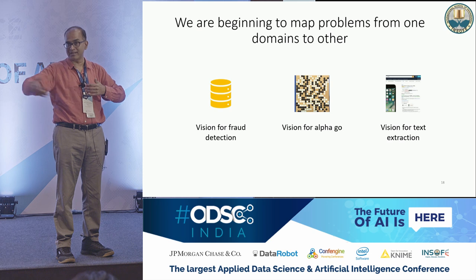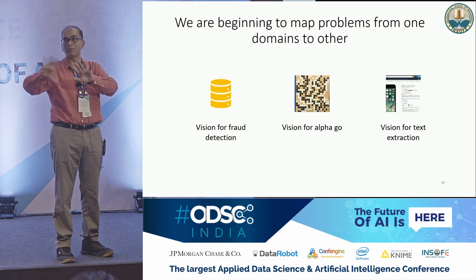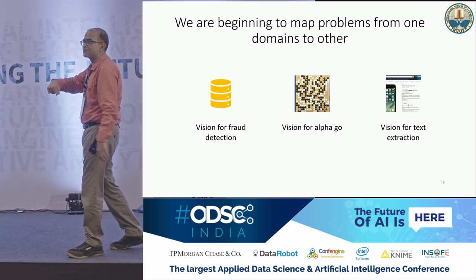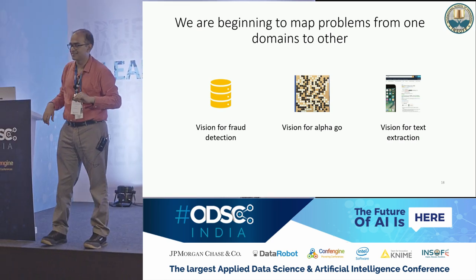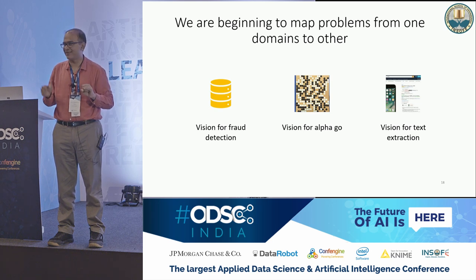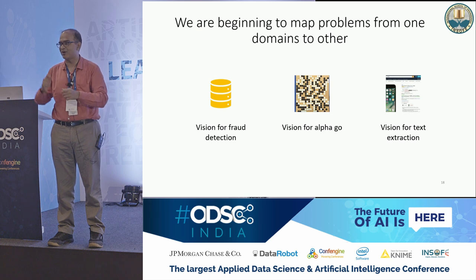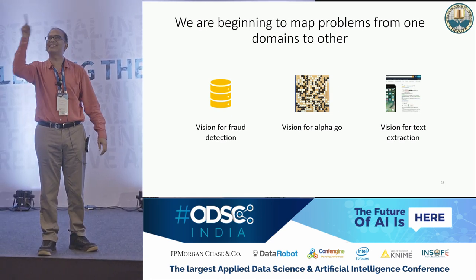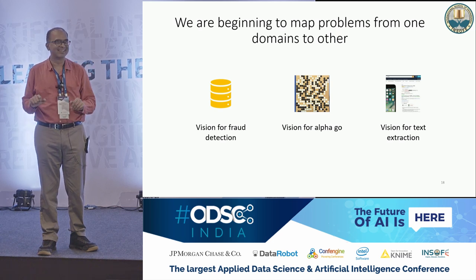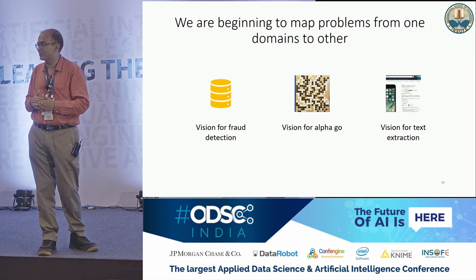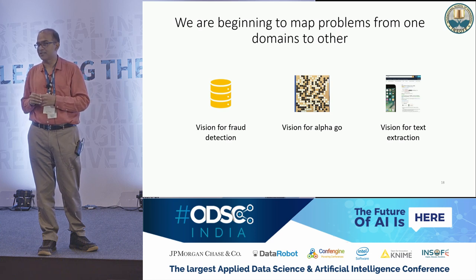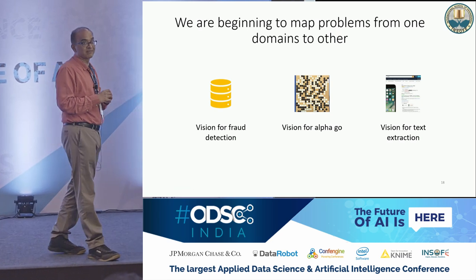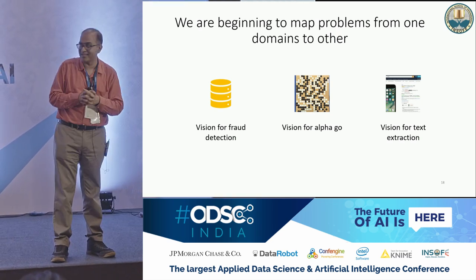Google's DeepMind — the one that beat the human Go competitor — used images of Go boards as input, with winning and losing as labels. I was working with an e-commerce site whose daily job is to look at competitor sites and collect prices. Typically you write regular expressions to pull out the price. But I said: as a human, when we look at a page we don't read the entire text to find the price — we just know it's somewhere specific. Maybe it's an image problem. I took JPEGs and fed them to a convolutional neural net regression — input the image, output the price. State-of-the-art accuracy. Mapping problems from one domain to another is a major architectural shift to cultivate.